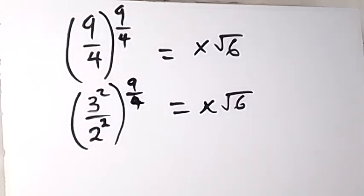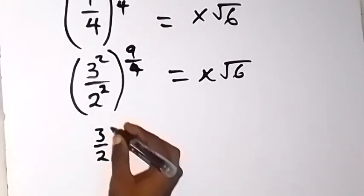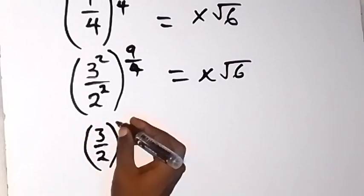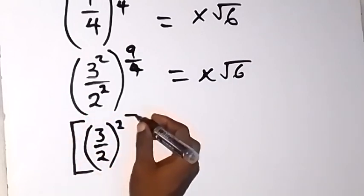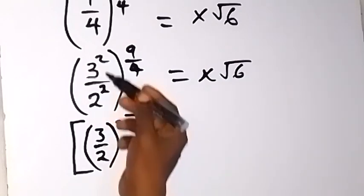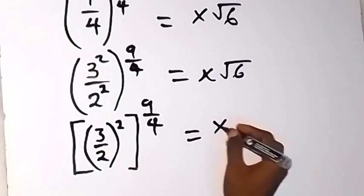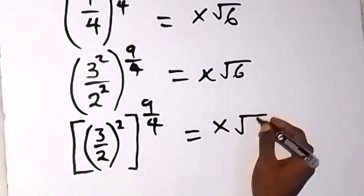Now from there, we can see that we have raise to power 2, raise to power 2. We can bring it out using the law of indices and say this will give us 3 over 2 raised to power 2, then raise to power 9 over 4. So we have brought these two out to the power. Now equals x root 6.